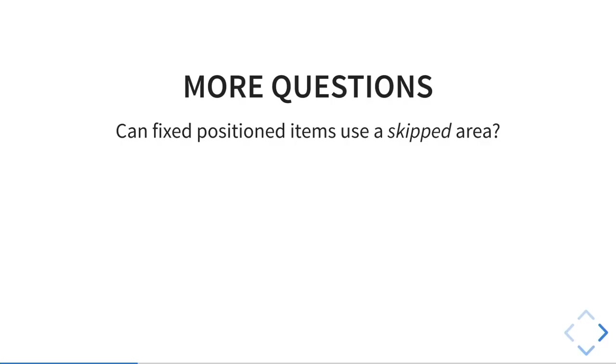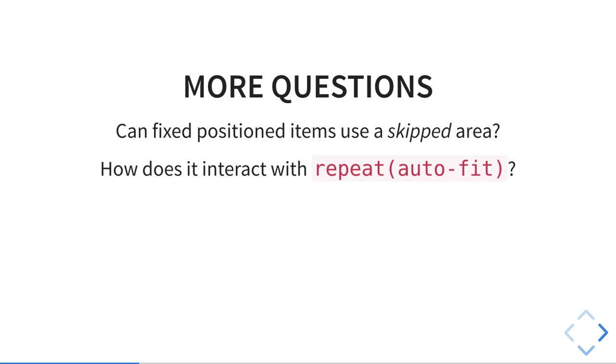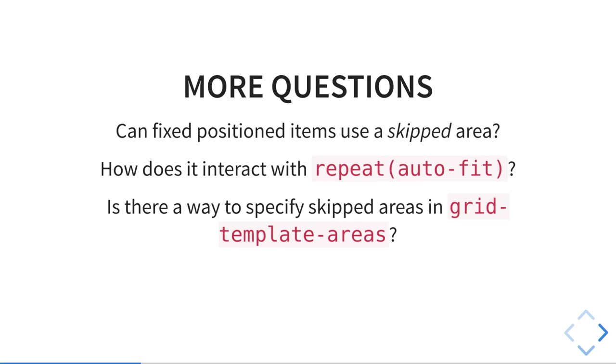But the CSS working group doesn't just say okay, we're done. There are many more things to think about, like what is the interaction of this new property with the rest of the grid spec. For example, can we still position items on these skip areas or not? That's a decision to take. How does it interact with auto-fit, which removes empty tracks? If you're marking it as empty, you don't want it to be removed. Or is there a way to specify this in grid-template-areas directly, maybe with a hash symbol? And many other questions. So it's not simple — just deciding a name and grammar, there's more.